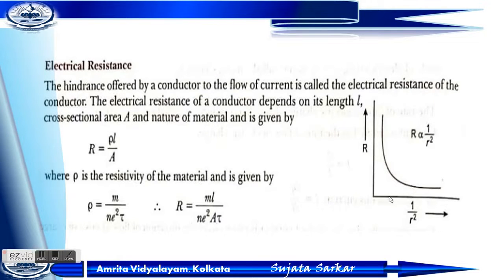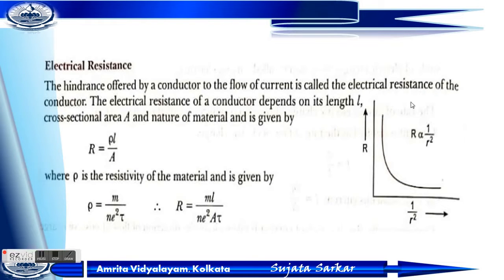Electrical resistance — first of all, we have to know what is electrical resistance. The hindrance offered by a conductor to the flow of current is called electrical resistance. The electrical resistance of a conductor depends upon its length, cross-sectional area, and the material. Length is directly proportional to resistance, and area is inversely proportional to resistance.